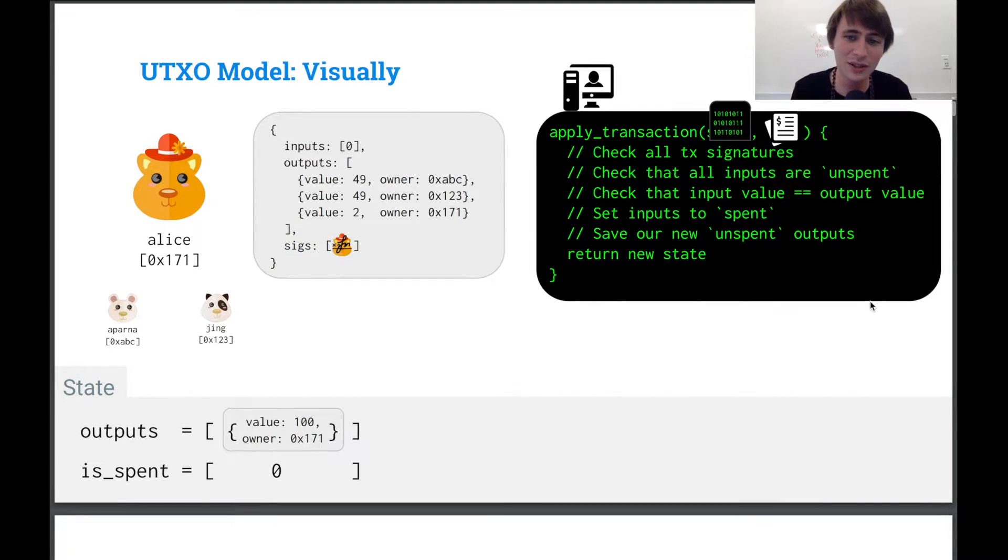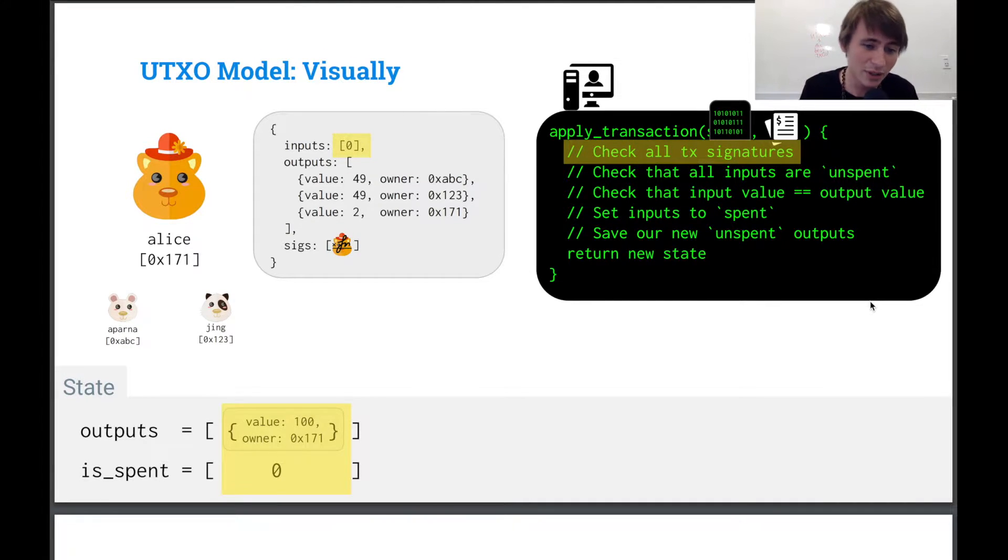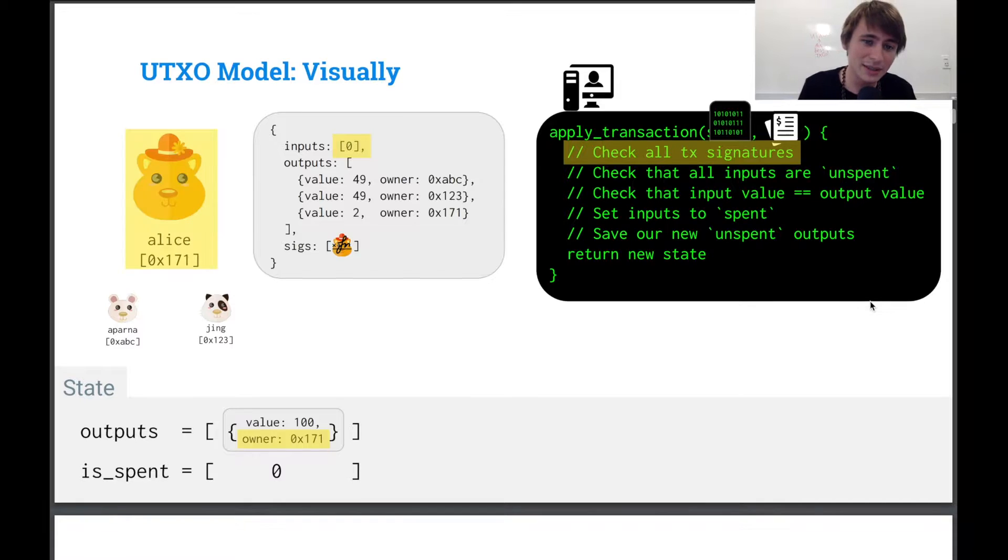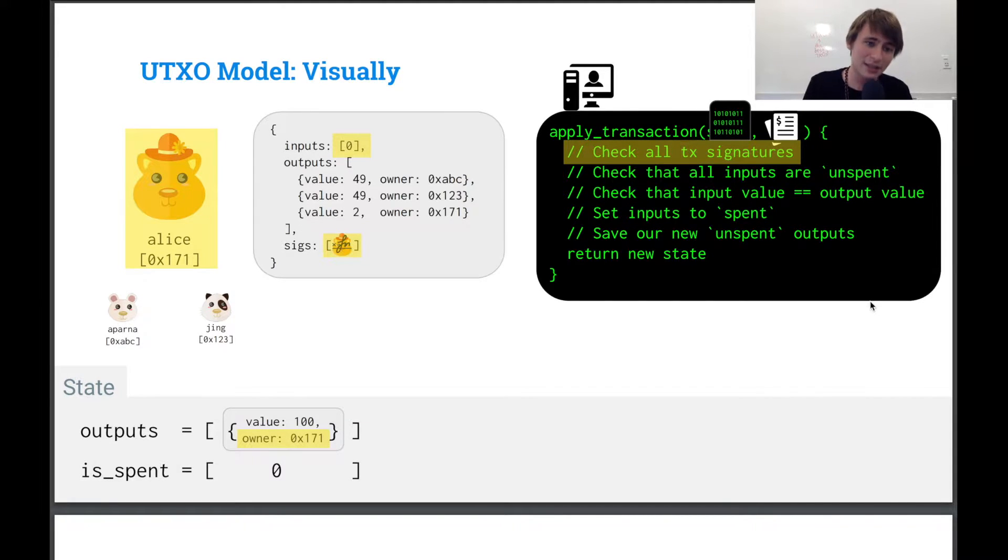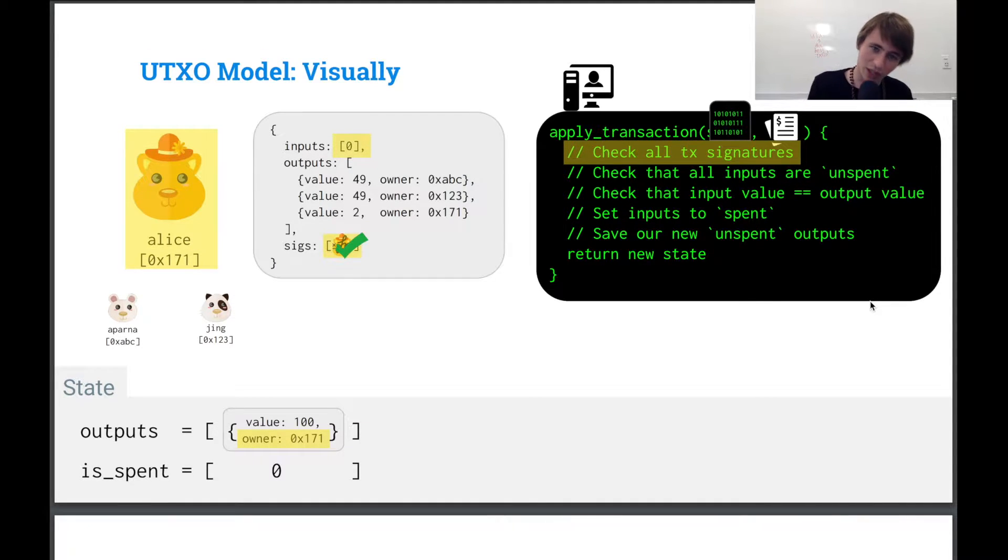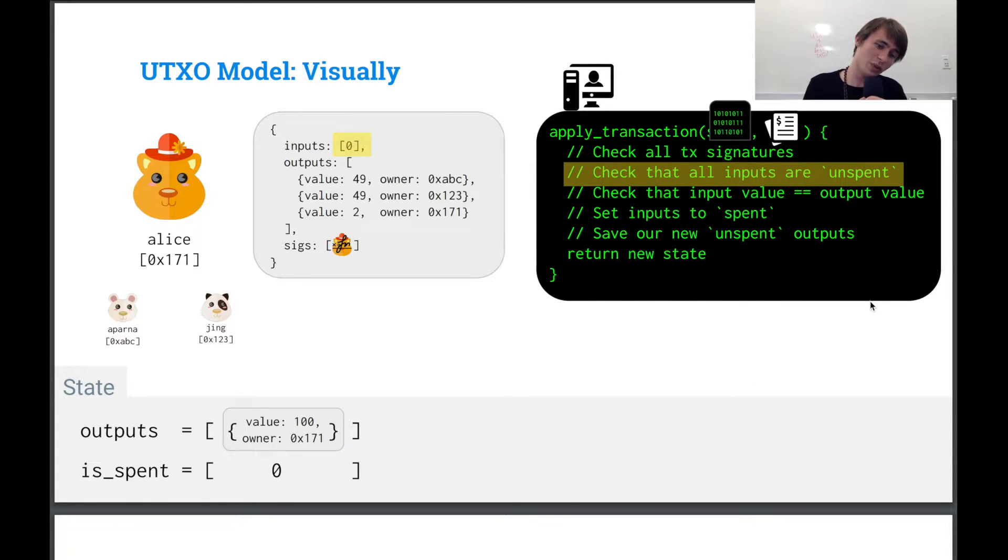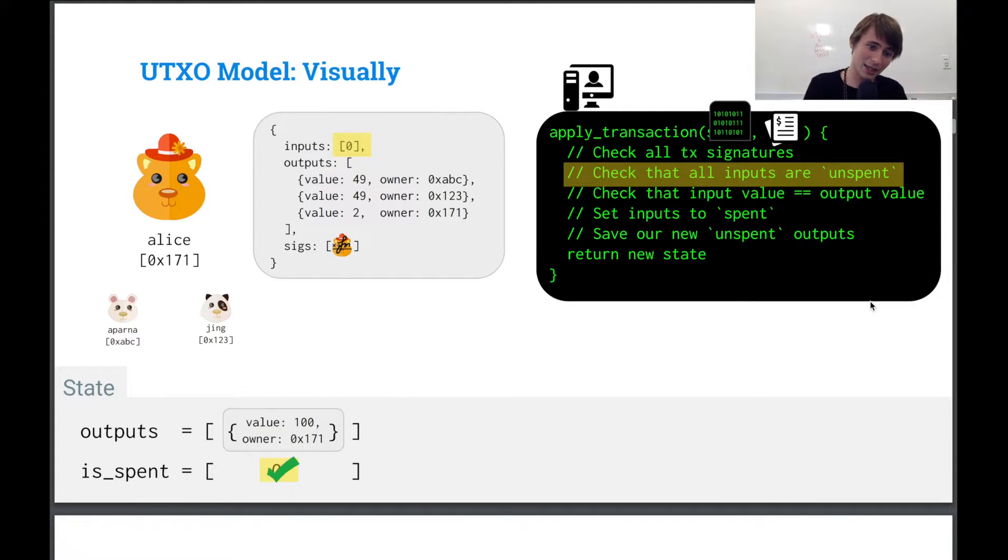So what do we do? Well, we put it into our apply transaction function. First, we check all the signatures. We look up the output, and we see, okay, does the owner match the signature? Yes, it does. It matches Alice. So check mark. Now we check all the inputs are unspent. So we check once again, the index and zero means unspent. So success.